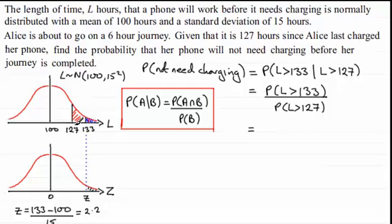133, in other words, is 2.2 standard deviations above the mean here of a hundred. The 127 we worked that out in the previous part. We worked out the probability of being more than 127, so we'll just recall that when we get there. But for this one, probability L is greater than 133, that's the same as the probability then of z being greater than 2.2. And we'll just divide that then by the probability of L being greater than 127.